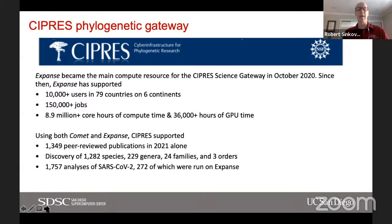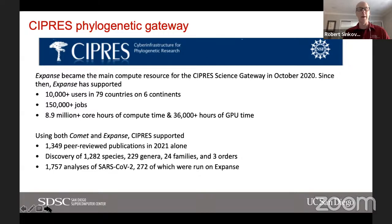So far we've supported more than 10,000 users in nearly 80 countries. They've run over 150,000 jobs, typically using close to 10 million core hours per year along with tens of thousands of hours of GPU time. This has resulted in thousands of peer-reviewed publications — in 2021 alone there were about 13, and the total count is now somewhere close to 10,000. This has had a big impact both during the pandemic in the analysis of SARS-CoV-2 sequences, and more broadly in the discovery of more than a thousand new species, new genera, new families, and new biological orders.